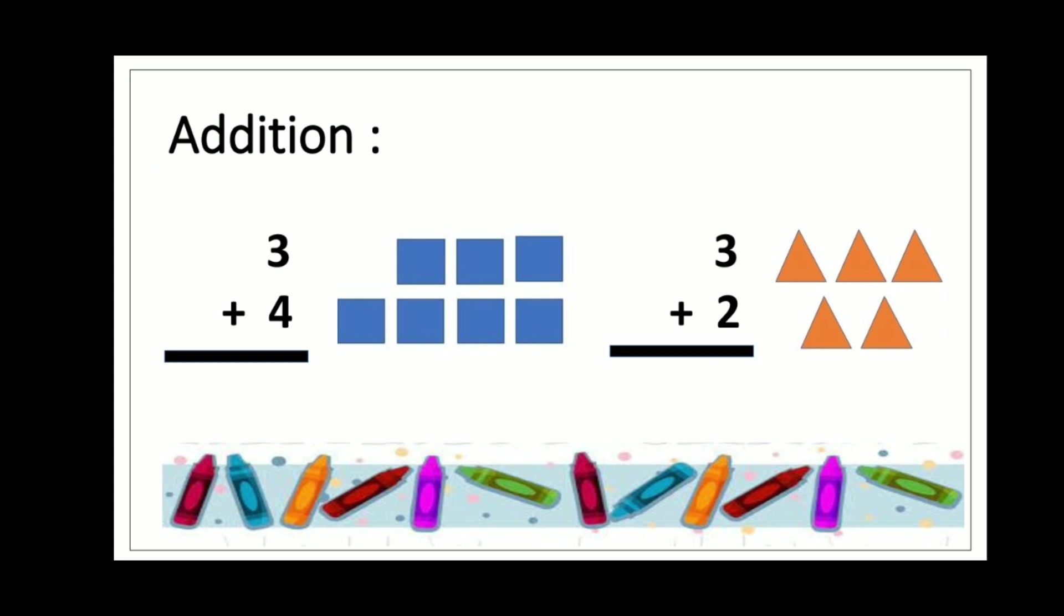Addition. Now students, check the answers. It can be checked by the counting and addition of the given objects. As you can see, three squares add into four squares, it will be seven. It means three plus four is equal to seven. Now you can count the squares. Same with another example: three triangles add into two triangles, it will be five. It means three plus two is equal to five. Count it: one, two, three, four, five.